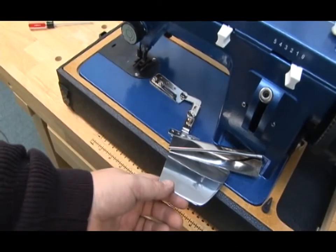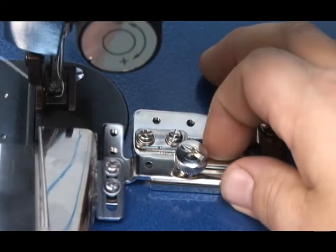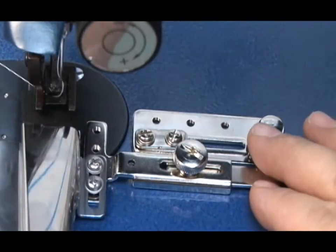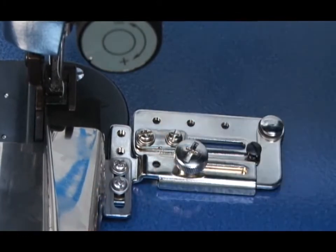When you are not using the binder, it can be swung away. For the position of your stitch, you can simply use this thumb screw and position the binder left or right for that stitch closer to the raw edge or more towards the center of your facing.